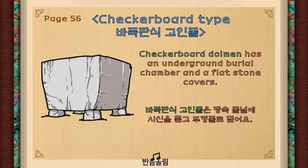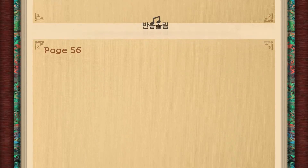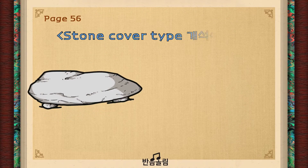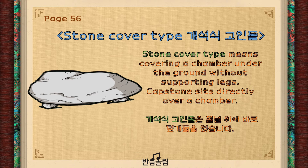The last type is called Stone Covered-type. Follow me: Stone Covered-type. Stone Covered literally means covering a chamber under the ground without supporting legs. It is similar to the Checkerboard-type, but it has no support stones — a capstone sits directly over a chamber.